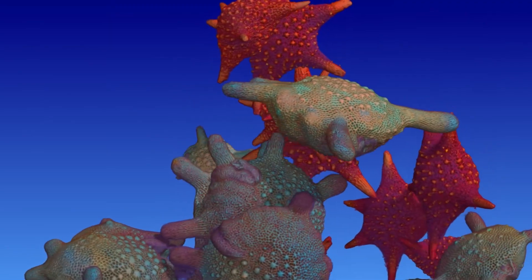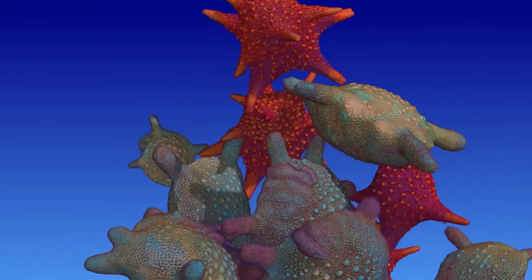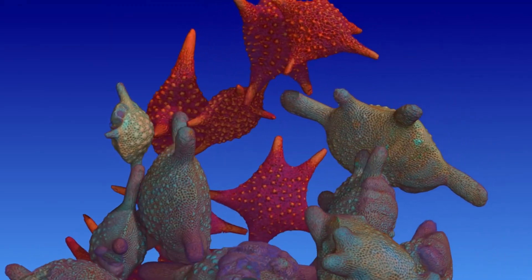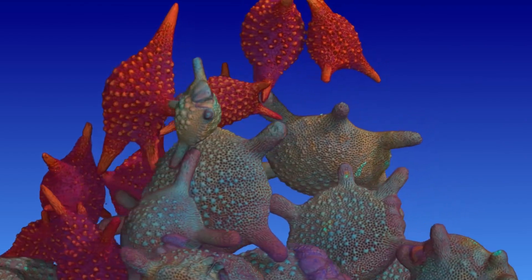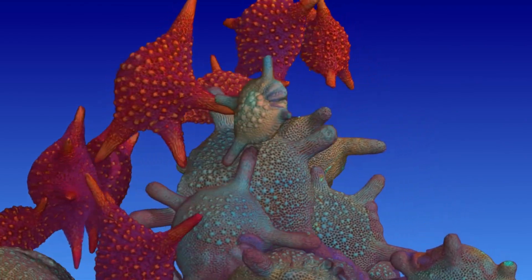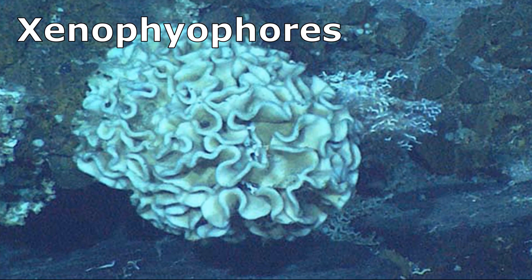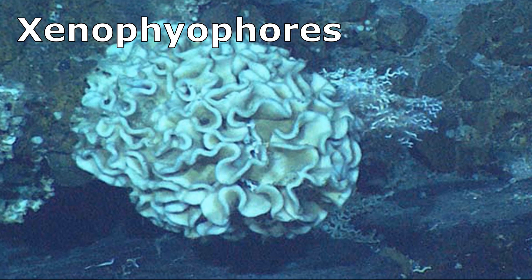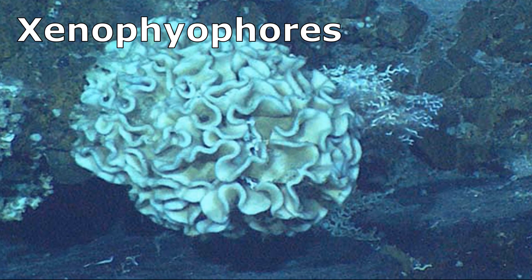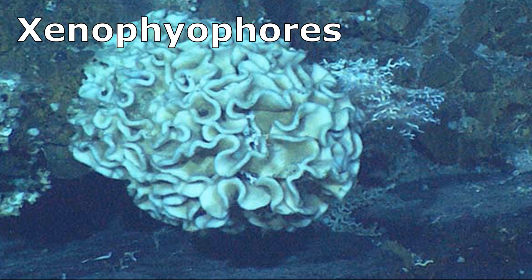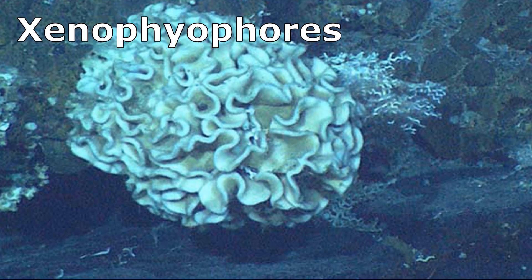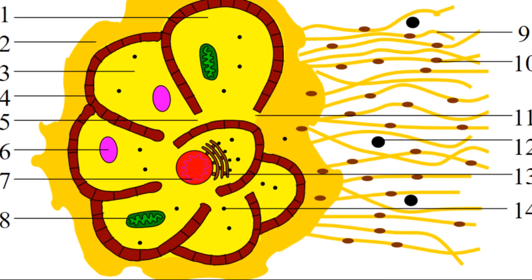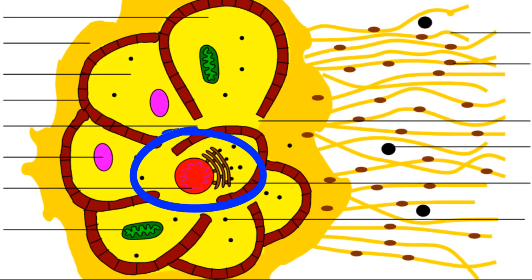Fully grown individuals range in size from about 100 micrometers to almost 8 inches long. One group, the xenophilophores, can grow to several inches in size as a single cell. A single foram may have one or many nuclei within its cell.